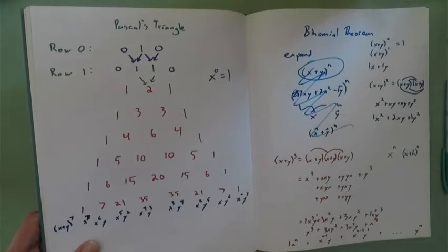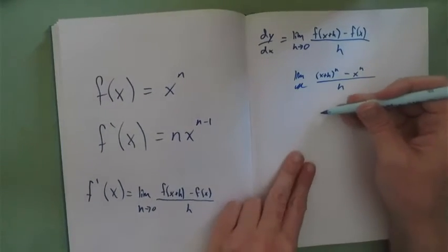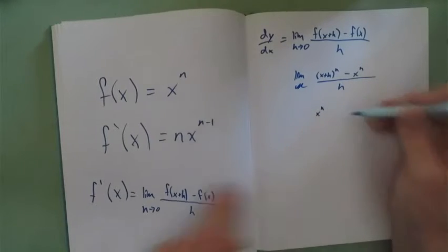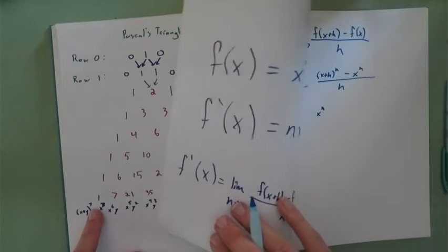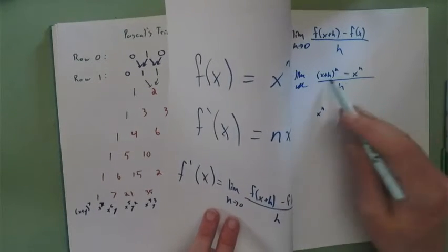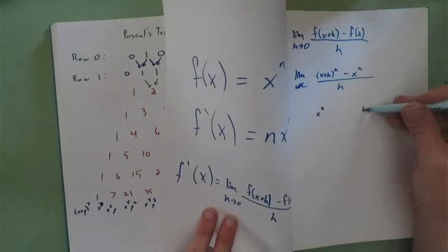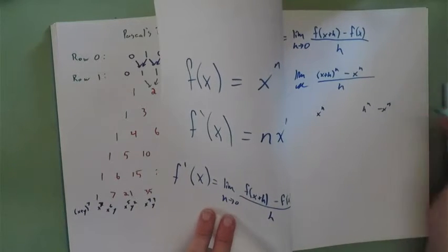So we're thinking x plus h in here to some power n. That's just good old-fashioned expanding a binomial coefficient. We're going to just do something along these lines. So what we're going to end up with in this case is we're going to have an x to the n under the 1, the outside of the triangle. We're going to also have an h to the n.